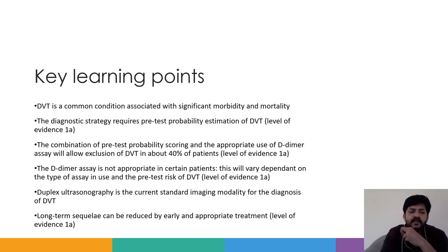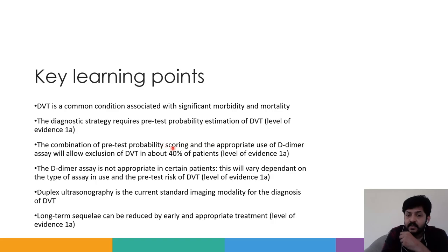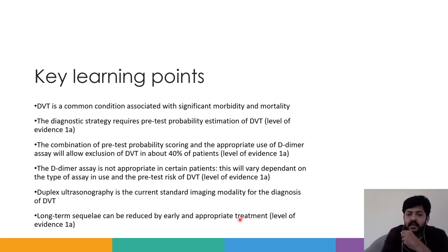Key learning points: DVT is a common condition associated with significant morbidity and mortality. The diagnostic strategy requires pre-test probability estimation using Wells scoring. The combination of pre-test probability scoring and appropriate use of D-dimer assay will allow exclusion of DVT in about 40% of patients. The D-dimer assay is not appropriate in certain patients, depending on the assay type and pre-test risk. Duplex ultrasonography is the current standard imaging modality for DVT diagnosis, and long-term sequelae can be reduced by early and appropriate treatment. Thank you.